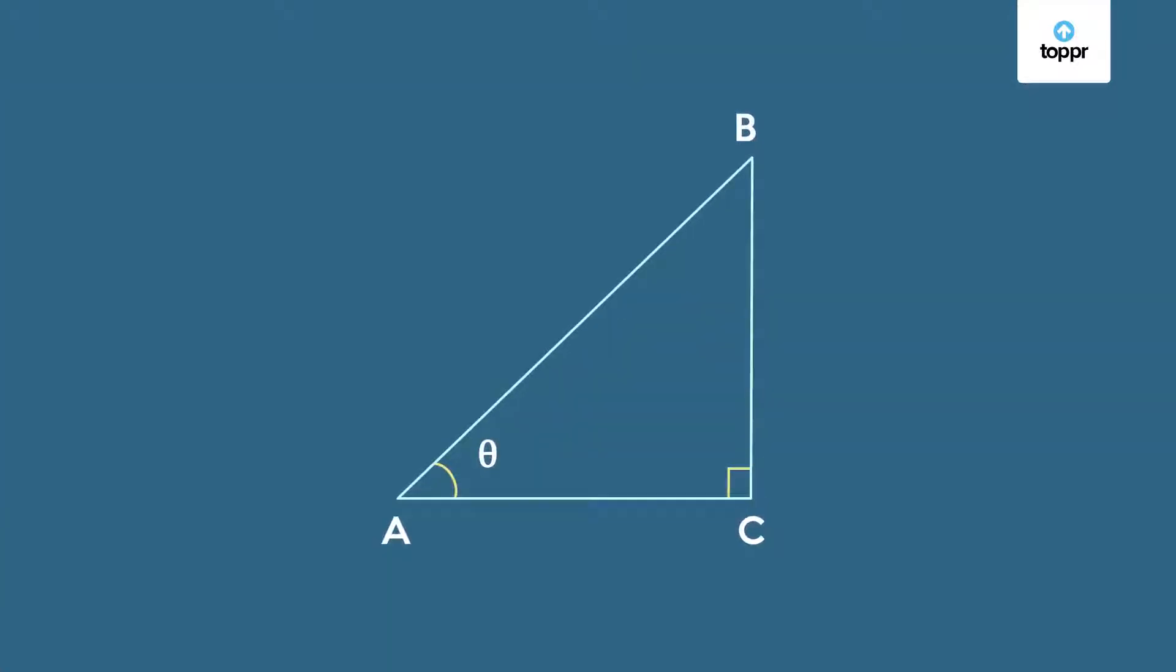Now in this lesson we'll see what happens to the trigonometric ratios when the acute angle is either very small, nearly zero or nearly 90 degrees.